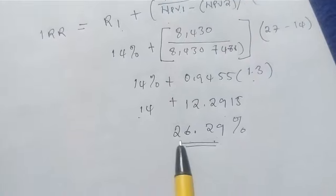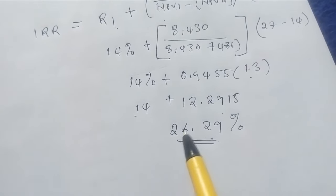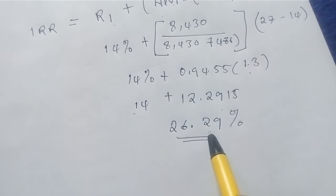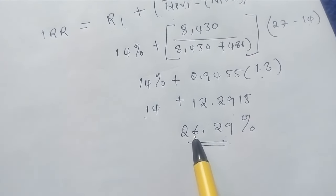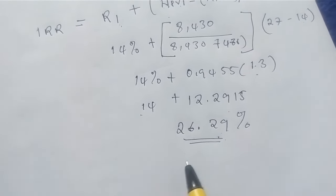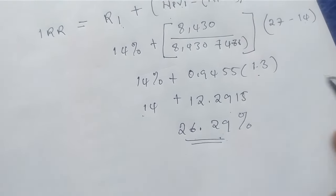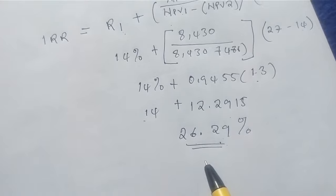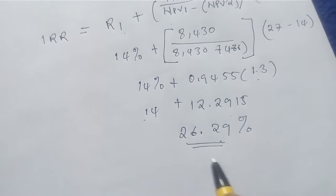Once you find the internal rate of return you have to make a decision: should we accept this investment or not? The decision rule for the internal rate of return is that you accept the project if the IRR is higher than the cost of capital or the required rate of return. In this case, 26.29% is greater than 14% which is the cost of capital, meaning at this rate it is profitable because it exceeds the cost of capital to the organization. This is how we calculate the internal rate of return.